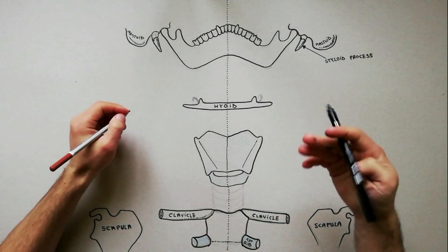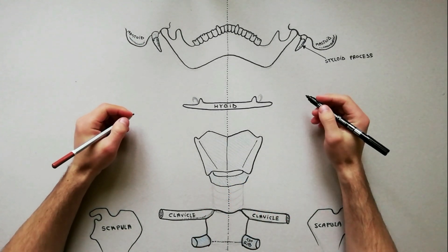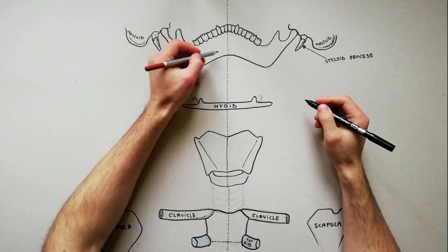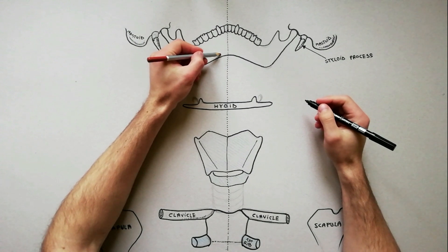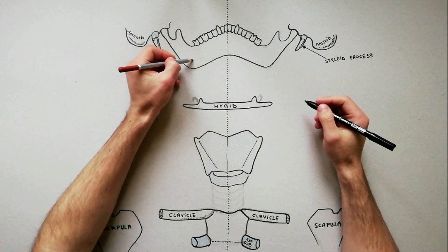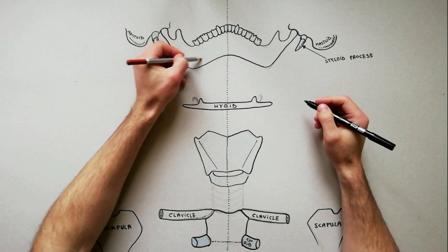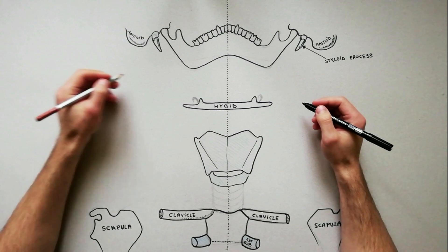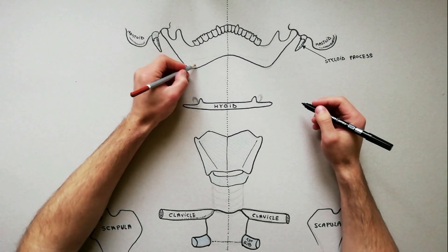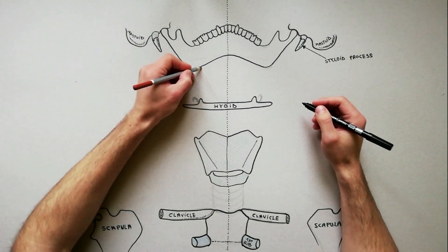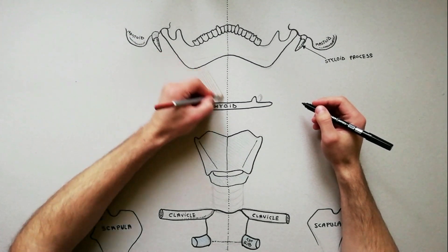The suprahyoid muscles comprise the following four paired muscles. First to indicate is the mylohyoid muscle. The origin of this muscle is from the mylohyoid line of the mandible.